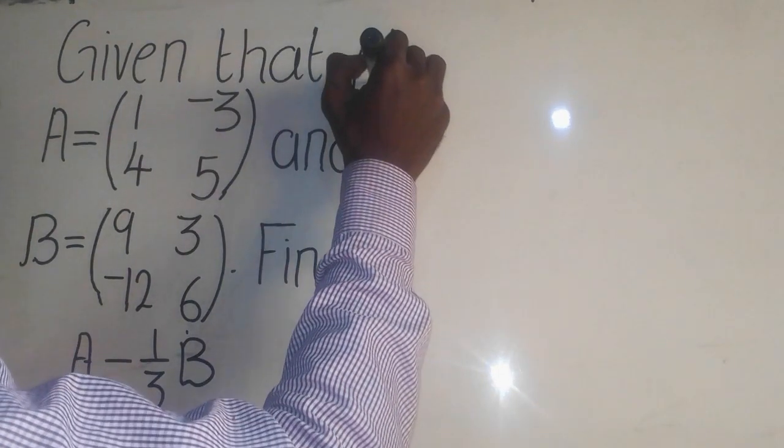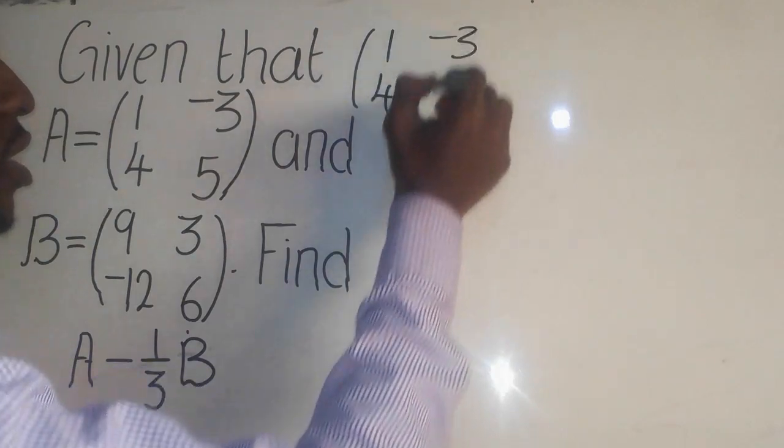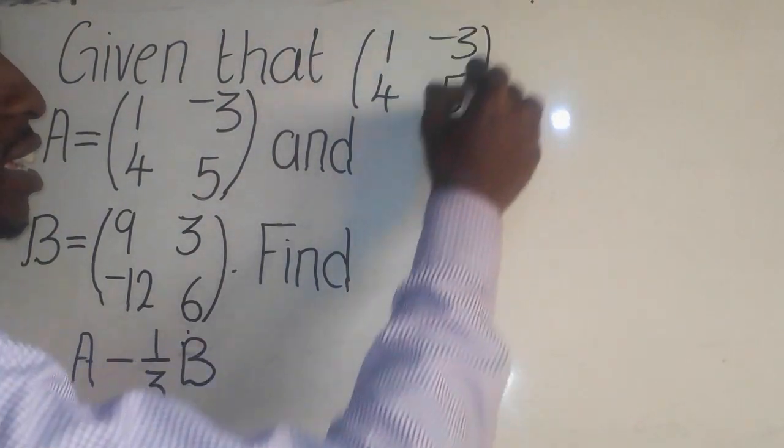So we have 1, we have 4, we have negative 3, we have 5 there, like this.